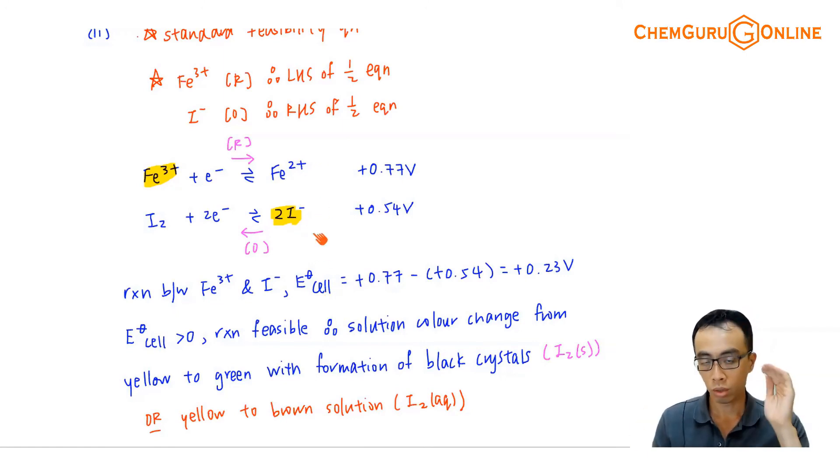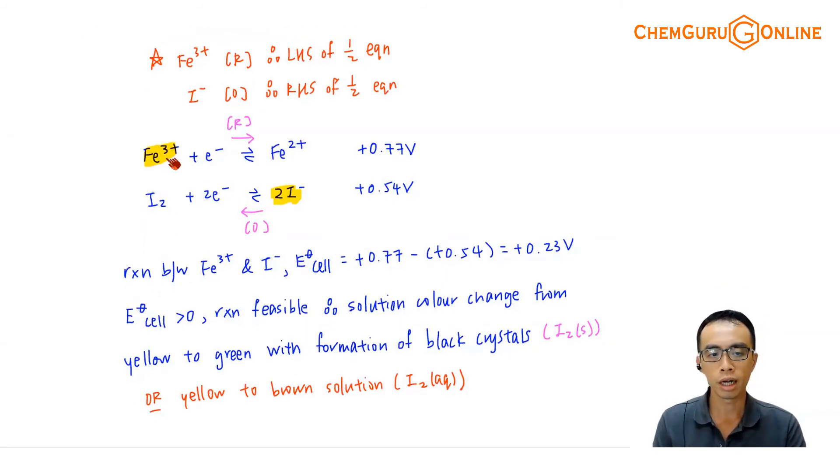When we calculate E cell, when we decide who is oxidized or reduced, we don't do this by looking at the E value, but rather looking at whatever terms that is given in the question. In this case, if I've already determined iron 3 plus is reduced, I minus is oxidized, then I can calculate E cell, right? Reduction minus oxidation. I can show that this is a positive value. If this is a positive value means that the reaction is feasible, then we can describe the process based on whatever reaction that takes place.